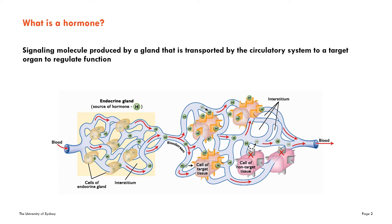The textbook definition is written there on the screen and you can read that whilst I'm talking through the diagram. For me, a hormone is some kind of a molecule which is produced somewhere that ends up being transported somewhere else by the blood and it has an impact on another part of the body. In the context of reproduction, we often talk about hormones which are produced in the pituitary — that's where a lot of the really important hormones are made — or perhaps in the gonads, the testes or the ovary, and those hormones are then going to other parts of the body and having an effect there.